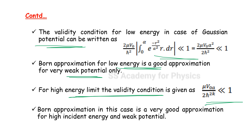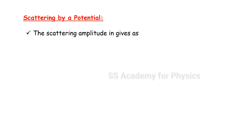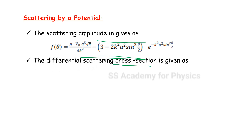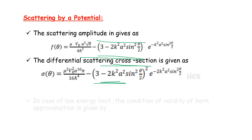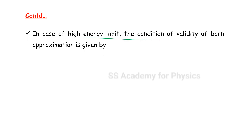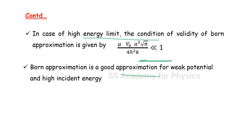The Born approximation in the Gaussian potential case is a very good approximation for high incident energy and weak potential. Then, scattering by a general potential: the scattering amplitude, differential scattering cross section formula, and validity conditions for both low energy and high energy limits are derived. The Born approximation is a good approximation for weak potential and high incident energy.